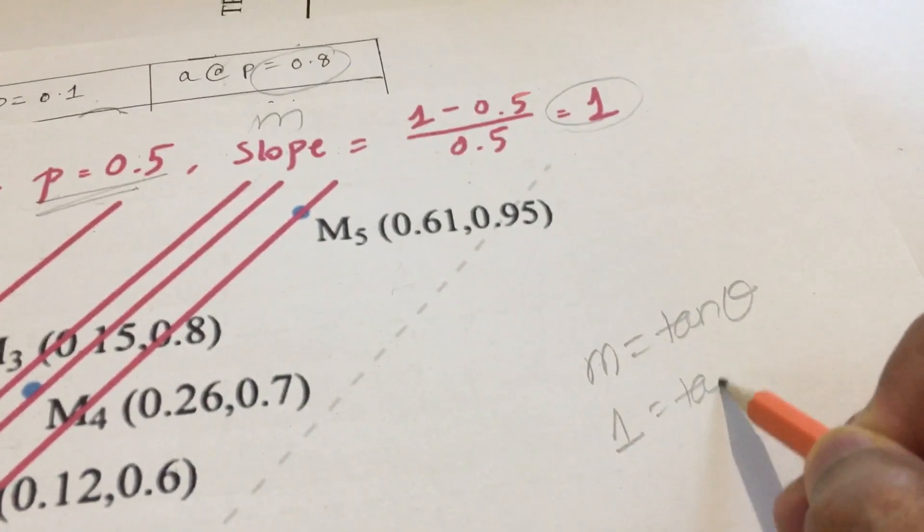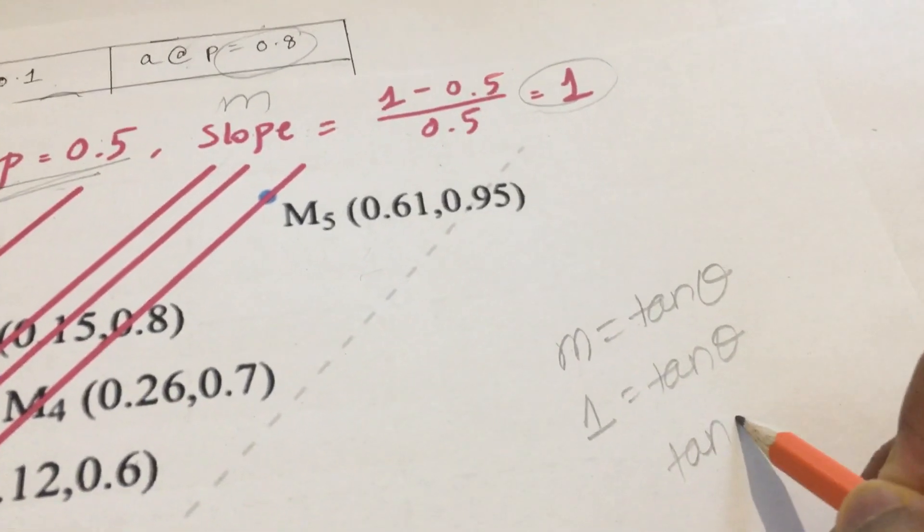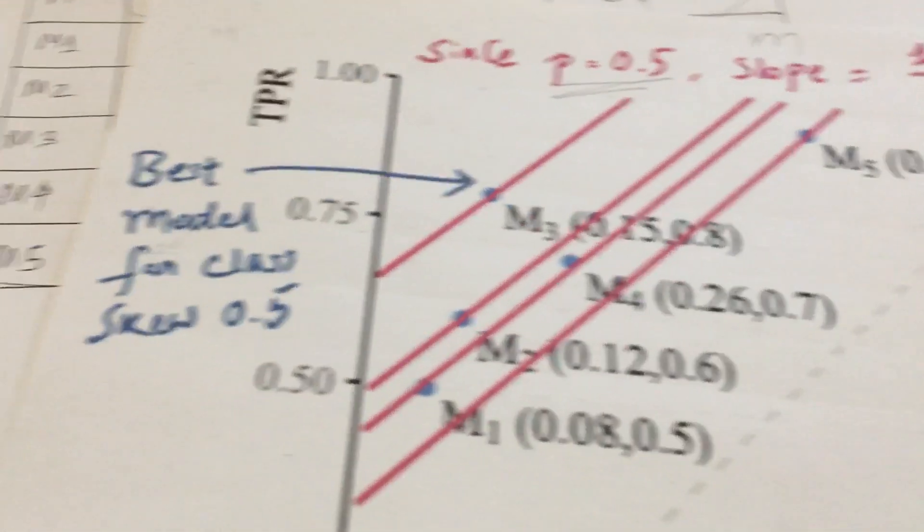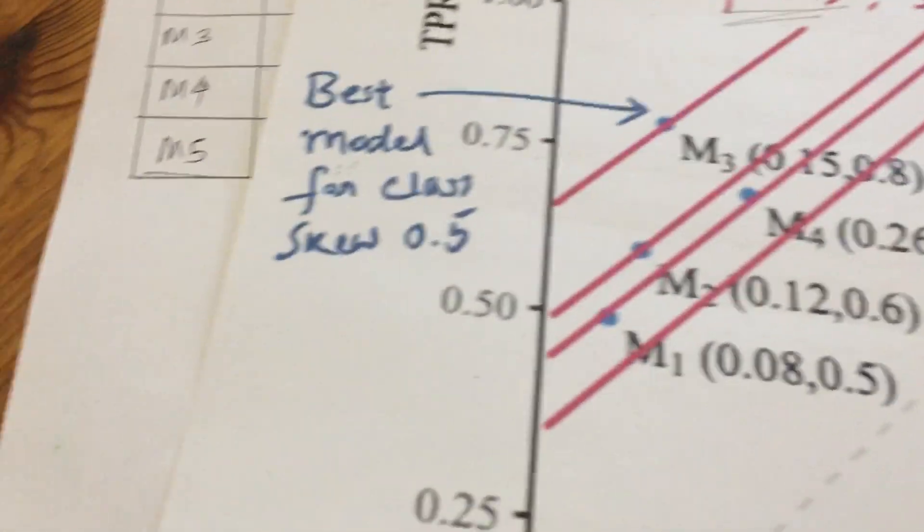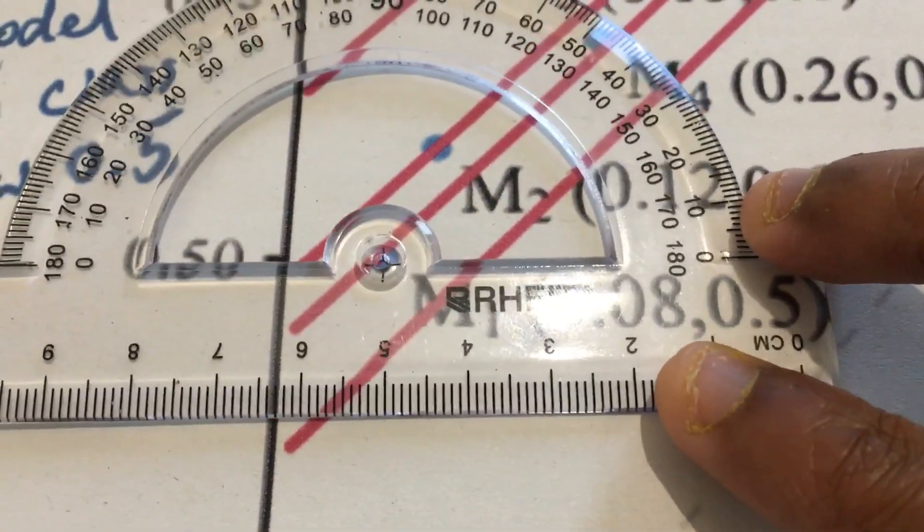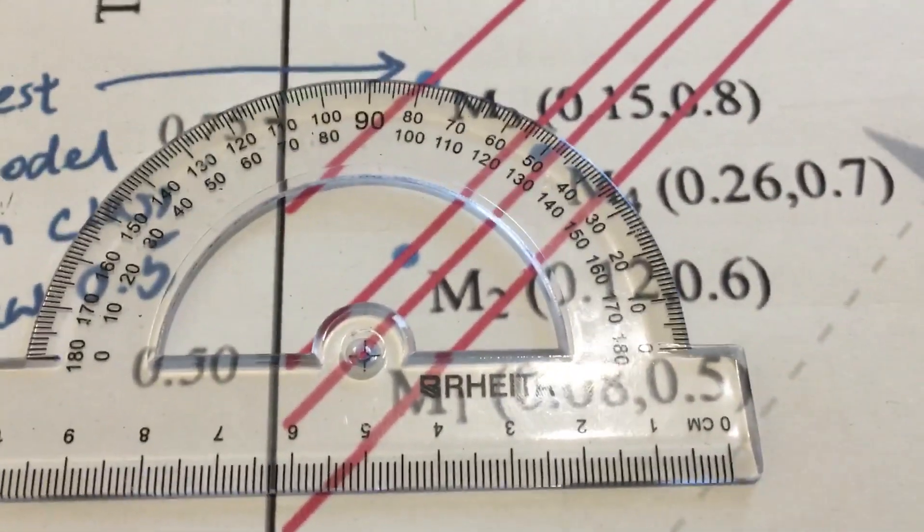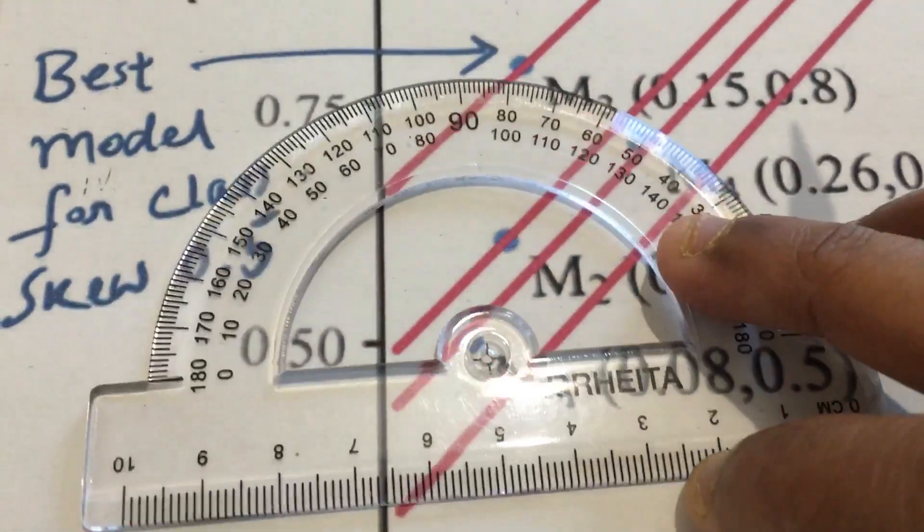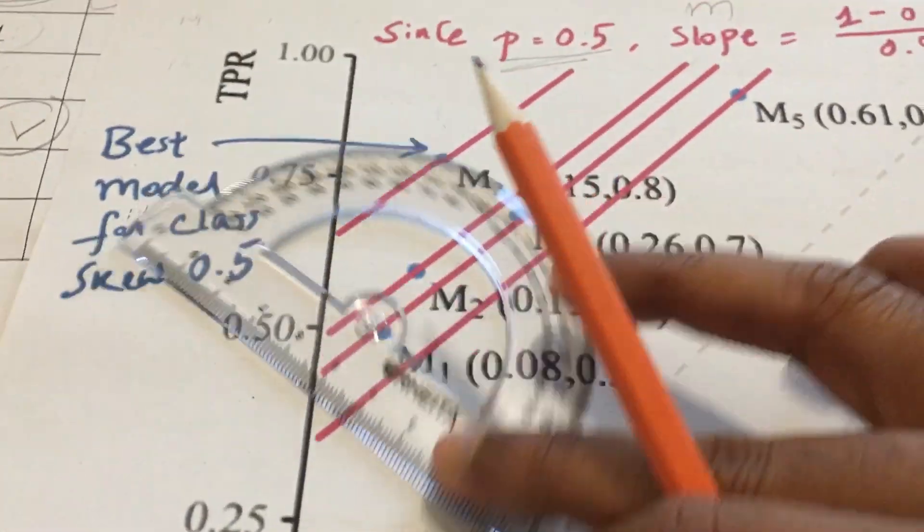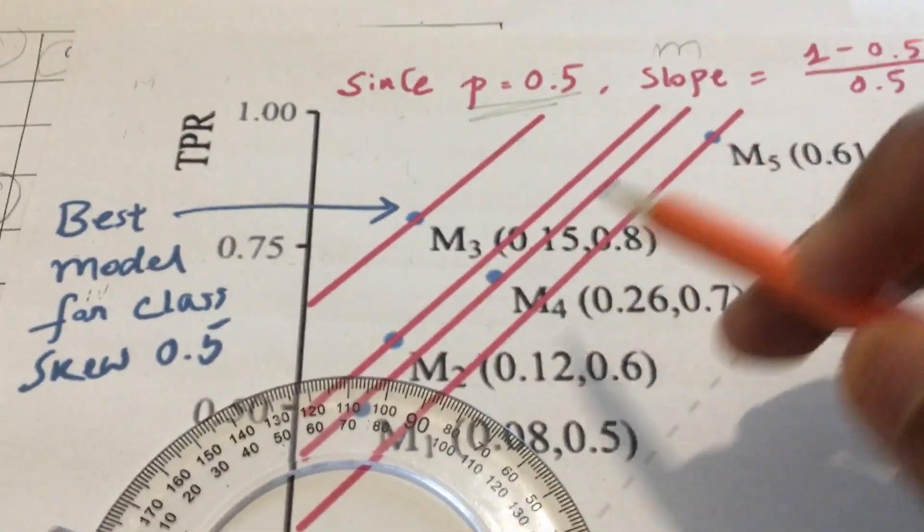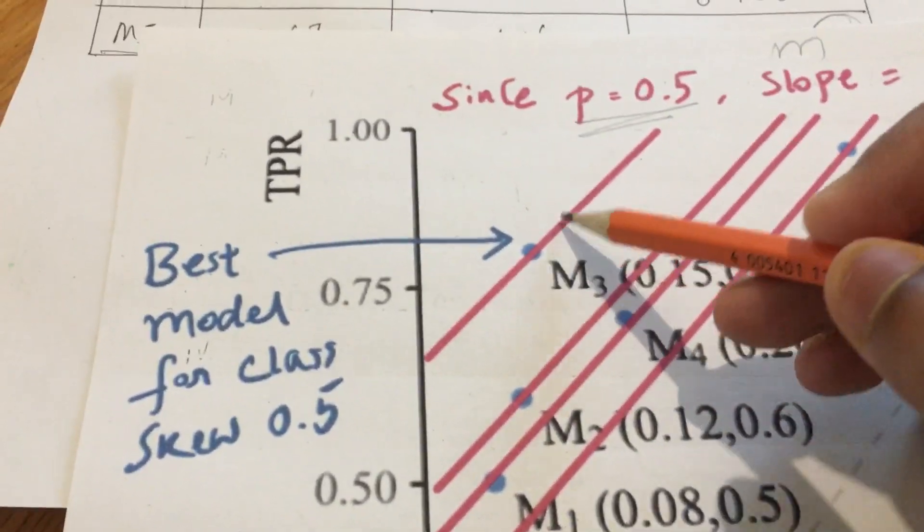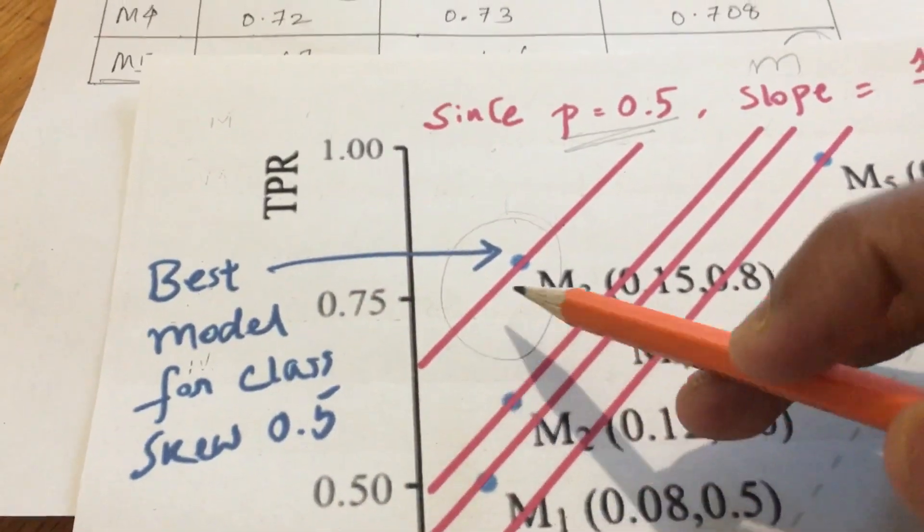How you plot these lines: M equals tan theta. So you have 1 equals tan theta, so theta equals tan inverse of 1, which gives 45 degrees. What you do is basically put a protractor here - you can see that is this one - and you draw one 45 degree line here. You get this line. Similarly for M2, M3, M4, M5 you draw similar lines. With the mathematical table you can tally that model 3 comes ahead of all these lines, so that is the best model for the class skew 0.5.